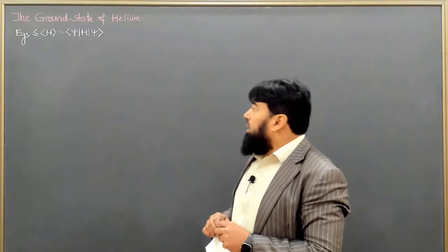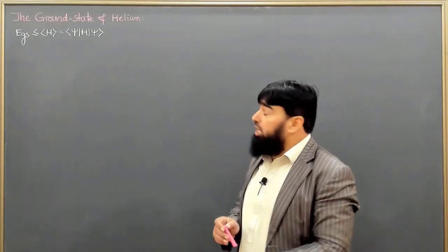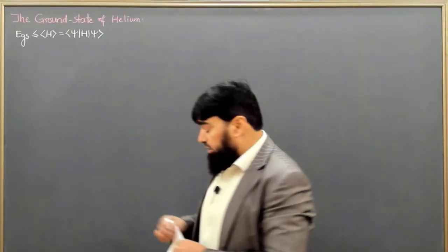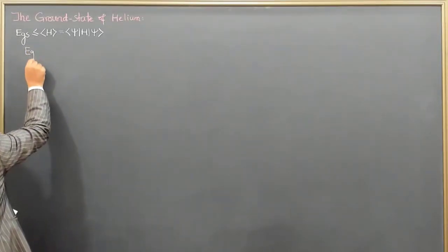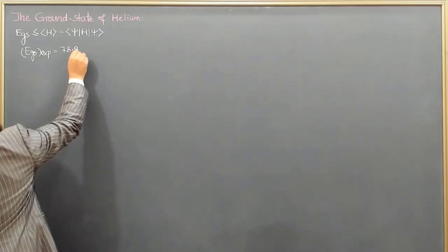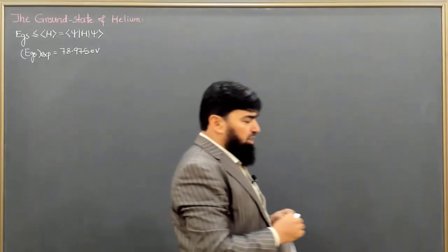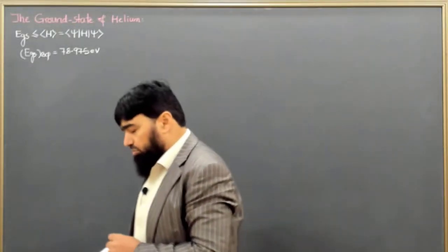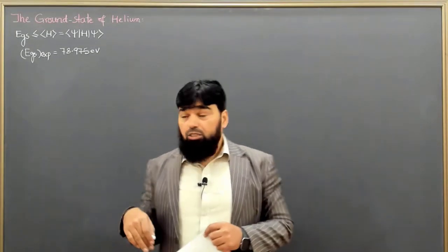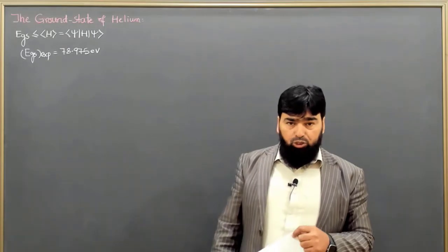Now we are in a more complex system — the helium ground state energy calculation. The ground state energy of helium has been measured experimentally and is equal to 78.975 electron volts. For the hydrogen atom, we earlier calculated the ground state energy as minus 13.6 electron volts, and we will utilize that energy in our calculation for helium.